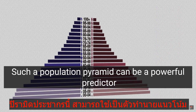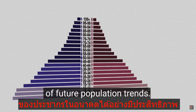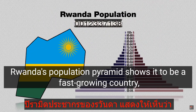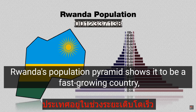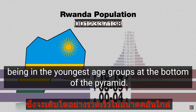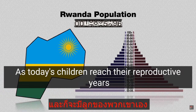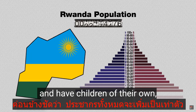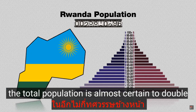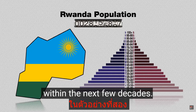Such a population pyramid can be a powerful predictor of future population trends. For example, Rwanda's population pyramid shows it to be a fast-growing country, with most of the population being in the youngest age groups at the bottom of the pyramid. The numbers will grow rapidly in the coming years, as today's children reach their reproductive years and have children of their own, making the total population almost certain to double within the next few decades.